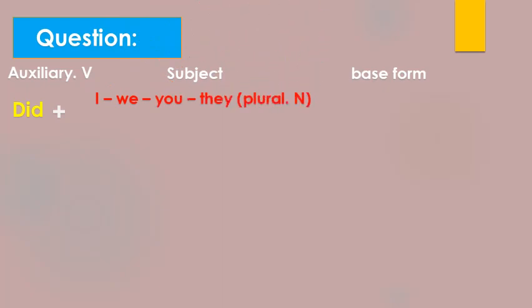Question form: so we have the auxiliary verb with subject then the base form, and it is important. Base form is the first form of the verb. So did with I, we, you, they or he, she, it, whether the subject is singular or plural, we use the base form, then we put the question mark.